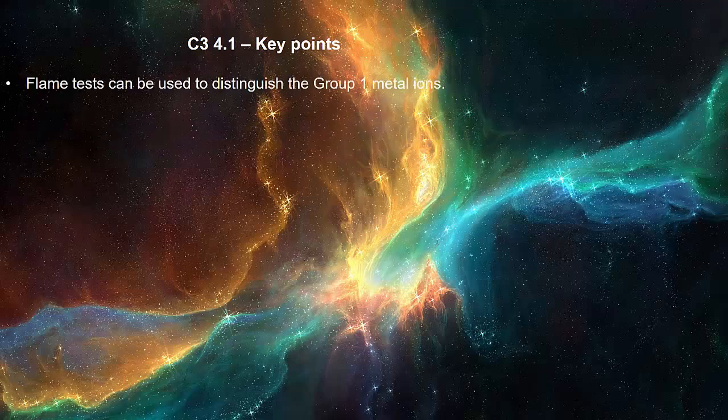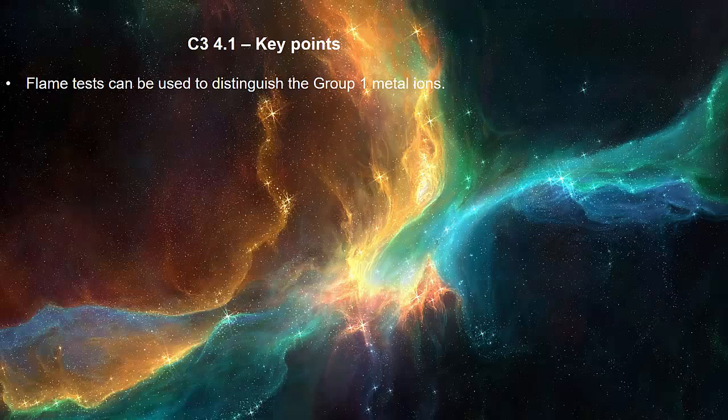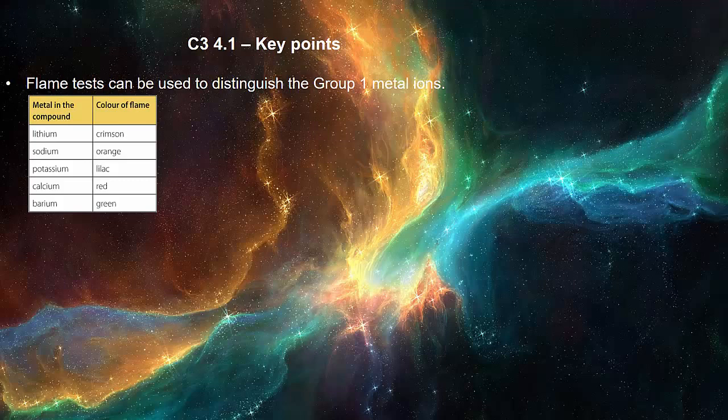Flame tests can be used to distinguish the group 1 metal ions. The colour of flame for lithium when burnt is crimson. For sodium is orange, for potassium is lilac, for calcium is red and for barium is green.